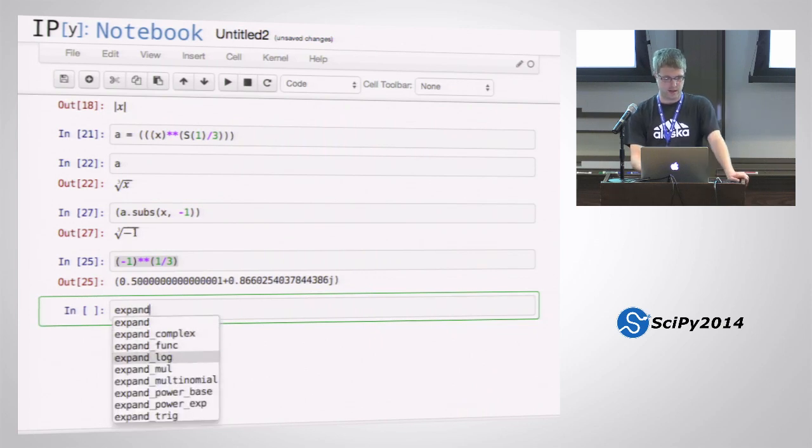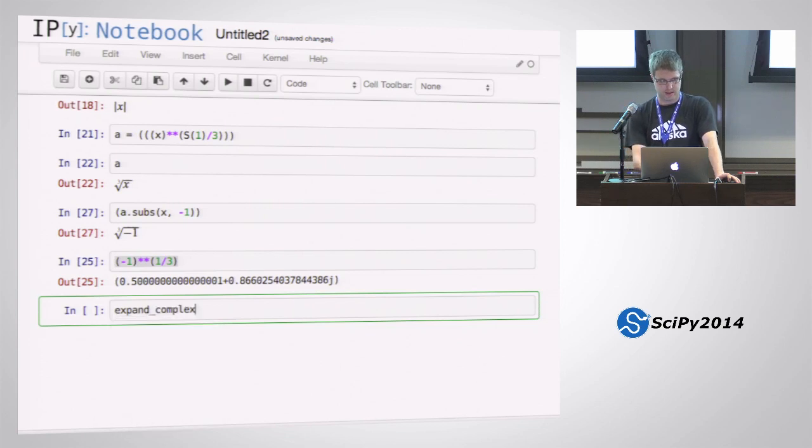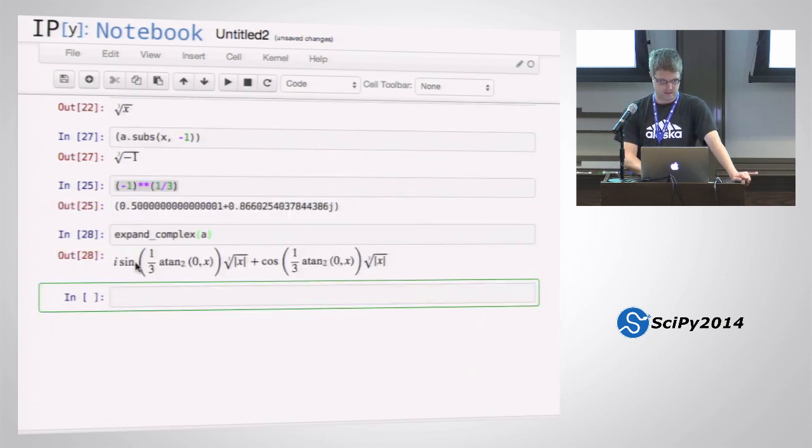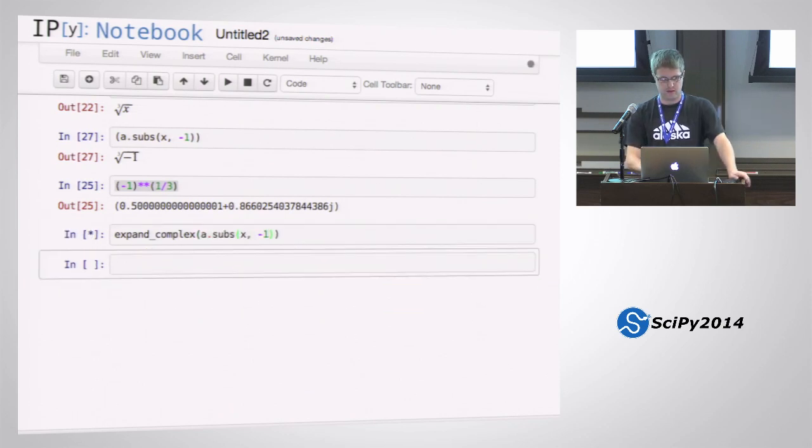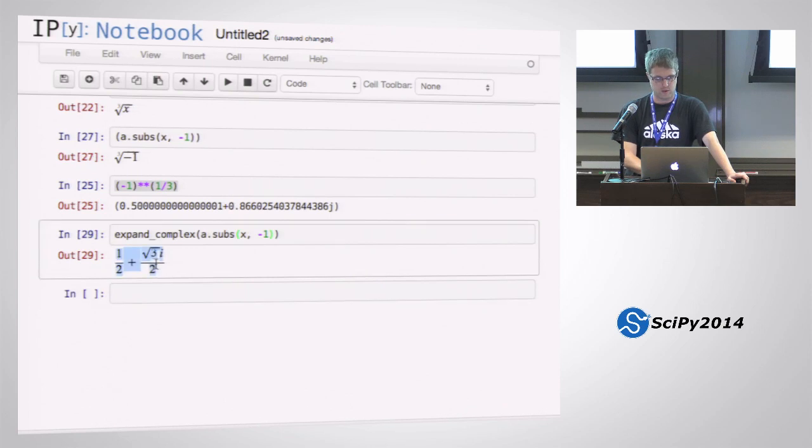There's different ways you can expand something. So for example, I can expand logarithms using log x times y equals log x plus log y. Expand complex will try to rewrite an expression as a plus bi where a and b are real. And if I do that on the cube root of negative one, it's one-half plus square root of three i over two.